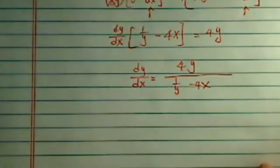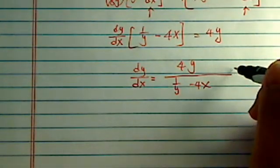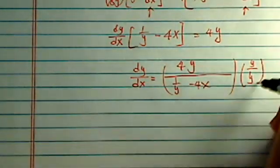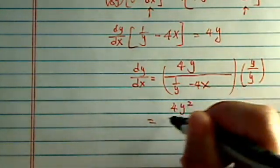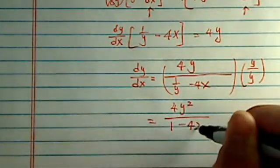This does not look that pretty. Let's say we're going to clean this up a little bit. Let's multiply the y top and the bottom, then we have 4y squared, 1 minus 4xy.